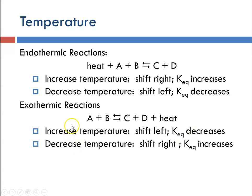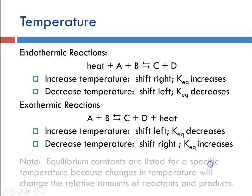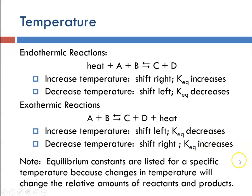If we were to decrease the temperature in an exothermic reaction, that would shift things toward the right to produce more heat. Since that produces more products — which are in the numerator — the value of the equilibrium constant would increase. Note that equilibrium constants are listed for specific temperatures because changing the temperature will change the relative amounts of reactants and products.